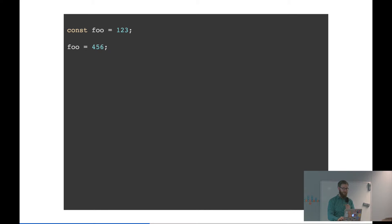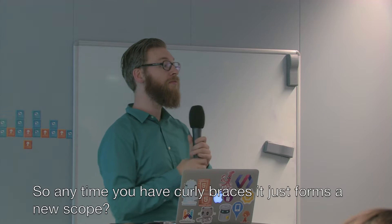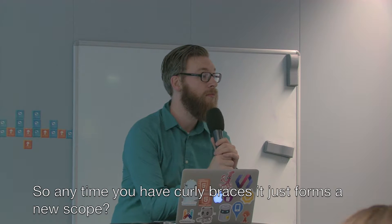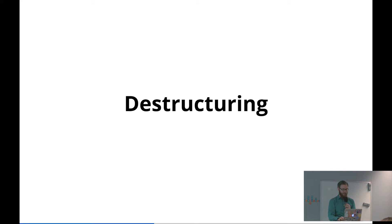Any questions about this? Even if you don't do the if statement and just use curly braces, it's also a new scope. So that's something a bit harder to grasp. Destructuring — it's about arrays and objects and how to assign them to variables in a different kind of way.